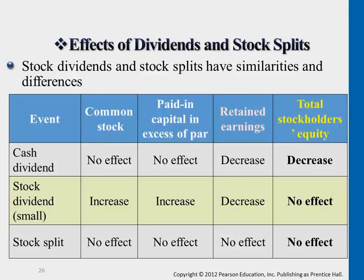If you just take a look at the first row, cash dividends — remember when we give out cash dividends, we first announce it, so there will be a dividends payable, and then when it comes to payment date, we reduce the dividends payable and actually pay cash. For cash dividends, really when we announce it, we reduce retained earnings. That's the only account affected in the equity section, and cash is affected since we're giving out cash.